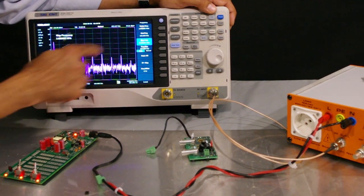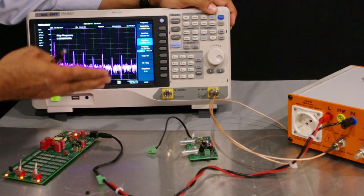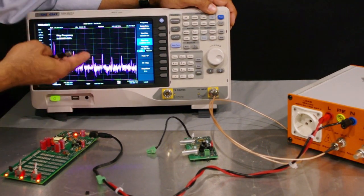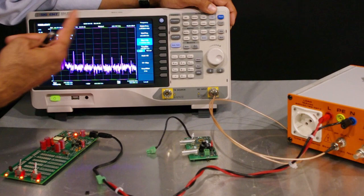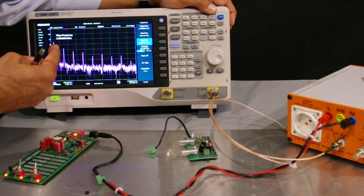What I can do now is freeze this, and then we can compare how these spikes are attenuated with and without the differential mode filter first, and then common mode filter.